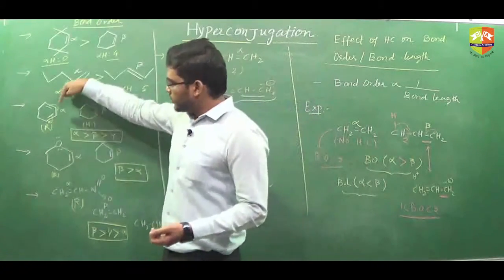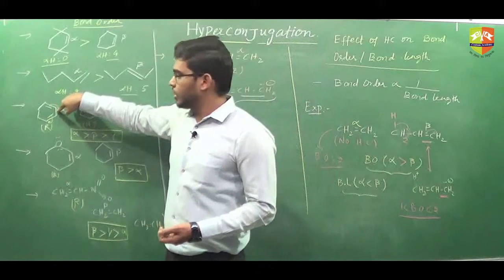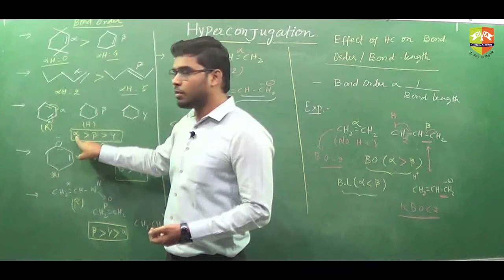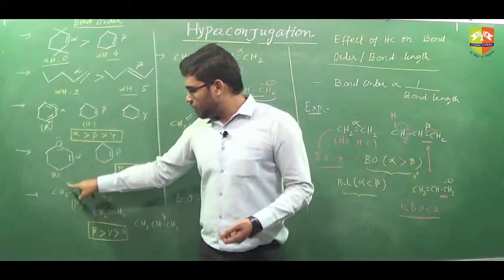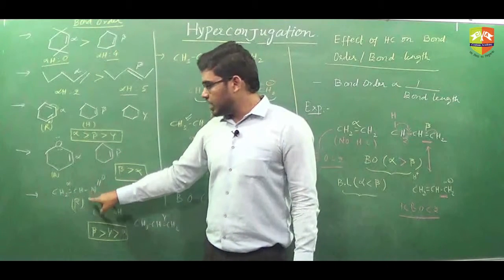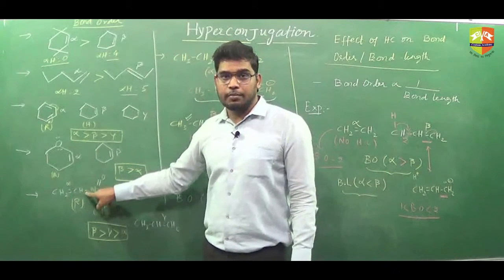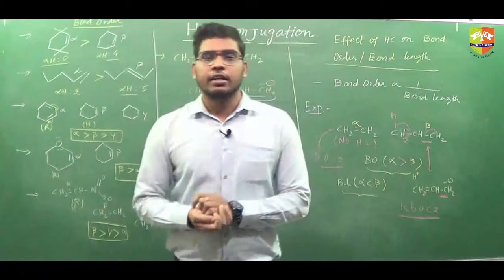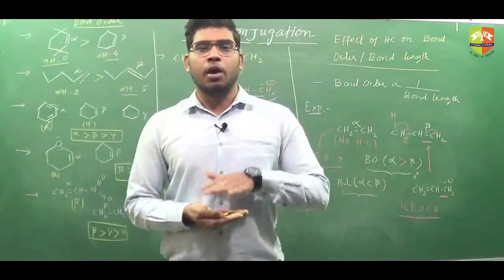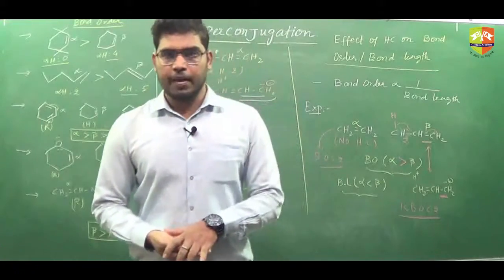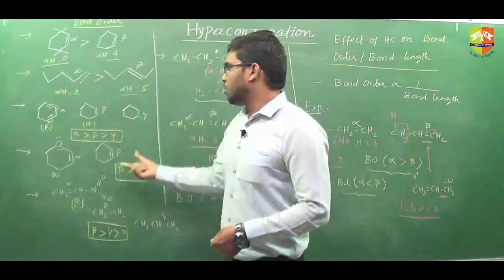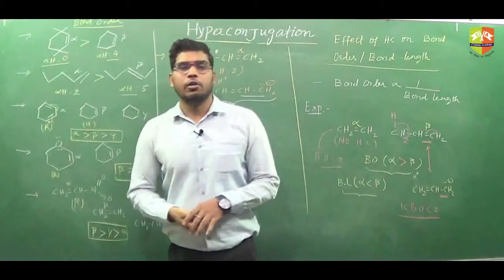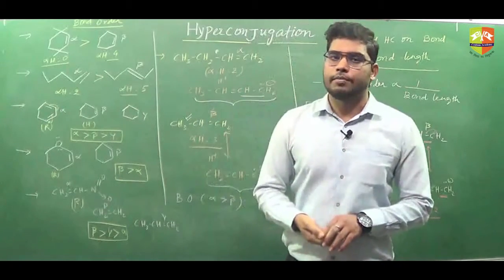Two things you have to keep in mind: the effect which is taking place — whether it is resonance or hyperconjugation — and because of that effect, whether the double bond is converting into single bond or the single bond is converting into double bond. Like here, the single bond is converting into double bond because of resonance — that is why the bond order of alpha is maximum here. But here because of resonance, the double bond is converting into single bond — that is why bond order is minimum. You do not have to generalize that because of hyperconjugation or resonance, bond order increases or decreases — it depends on what kind of structure we have and what bond we are considering.